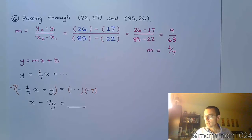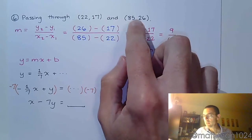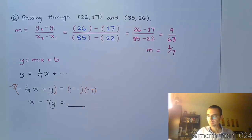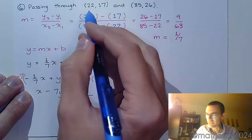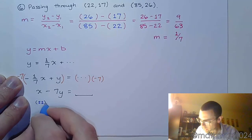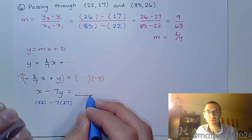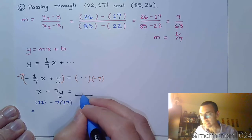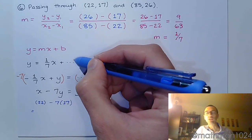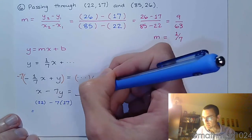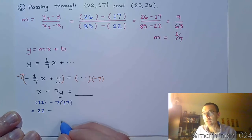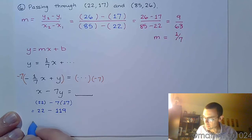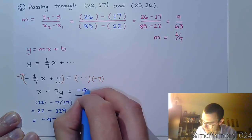So, it doesn't matter which ordered pair I choose. If I choose 22, 17 or 85, 26, I should get the same number over here. So, this is a bit of work that we have to do. Just a bit of arithmetic, really. So, my x value. I'm going to pick these guys. These are smaller. It should be easier, right? So, 22 minus 7 times 17. Once I do this math, that's going to give me that constant over there. It's not going to be the same as the b value, because we're just manipulating to get here. But it is going to tell me exactly what this number is in standard form. So, we have 22 minus 7 times 17. So, that's going to be 119. And when we do the math here, we get negative 97. So, that's the number that goes here. Just like that. So, here is our equation.